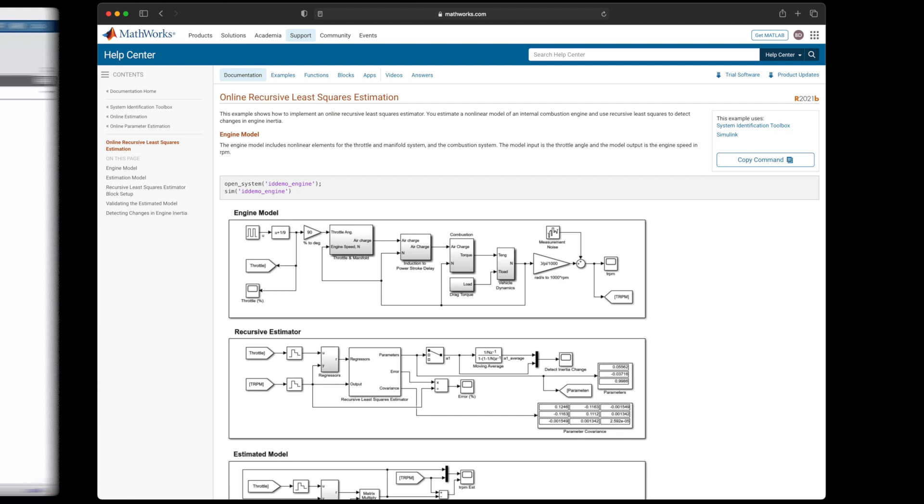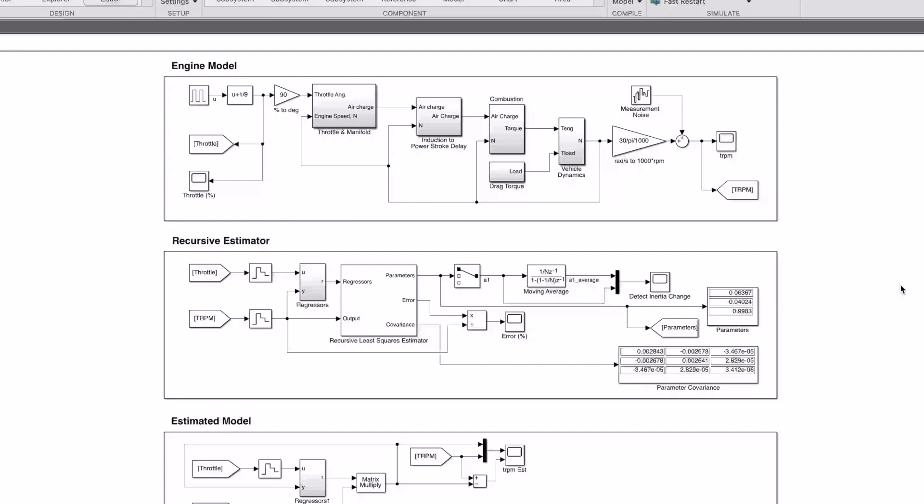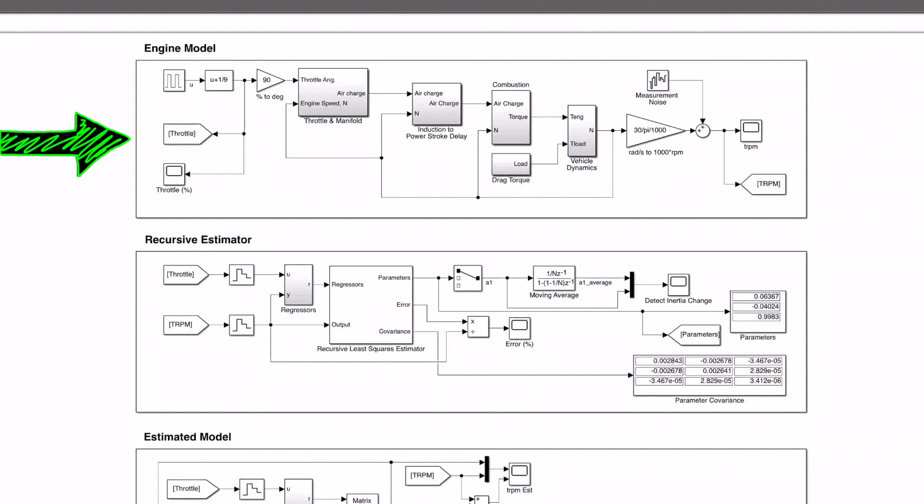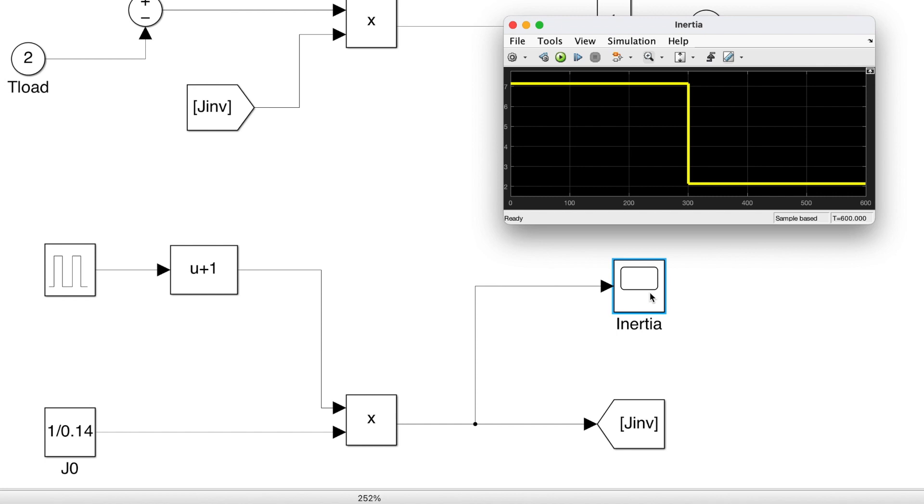The engine is nonlinear, and this portion of the model here represents the true dynamics of the system. At about 300 seconds, the engine inertia changes from a little over 7 to just over 2 kilograms meters squared, and this is what we want to detect.